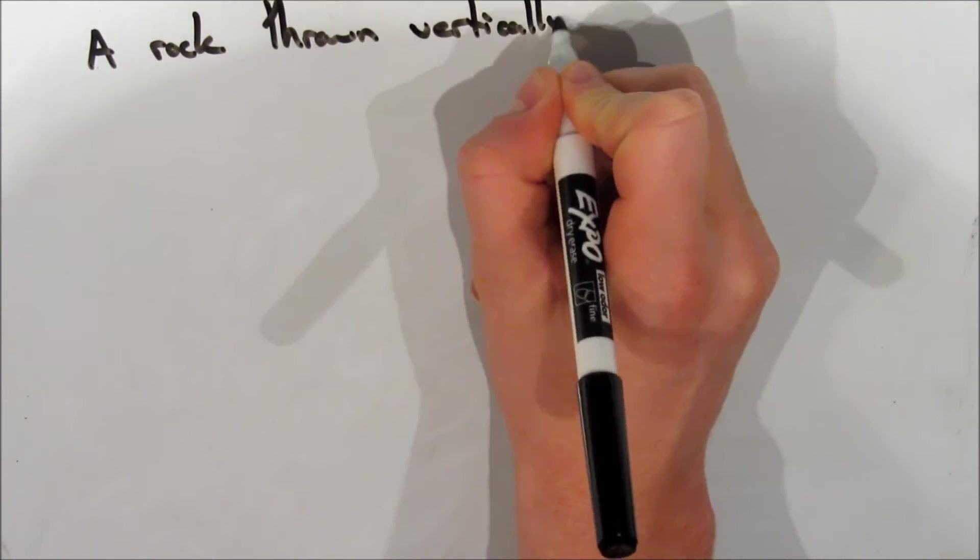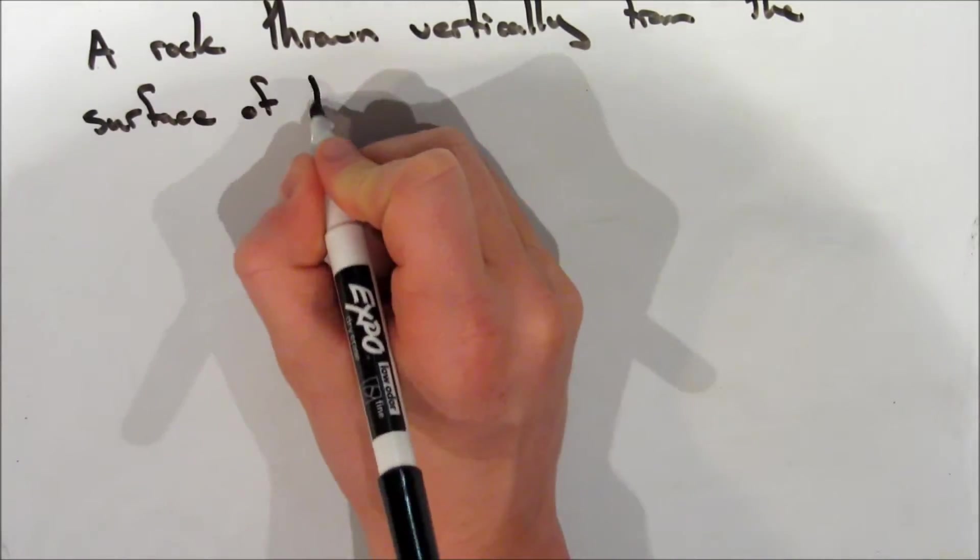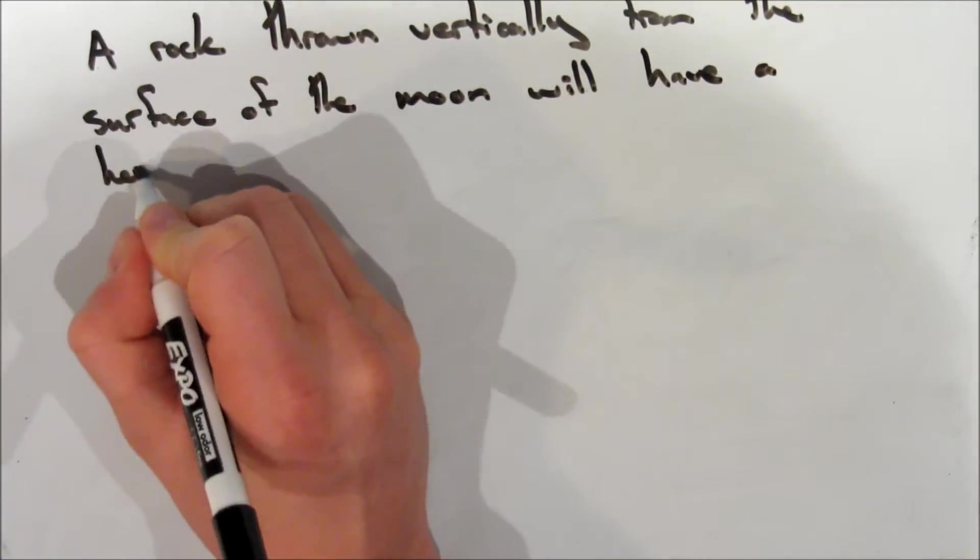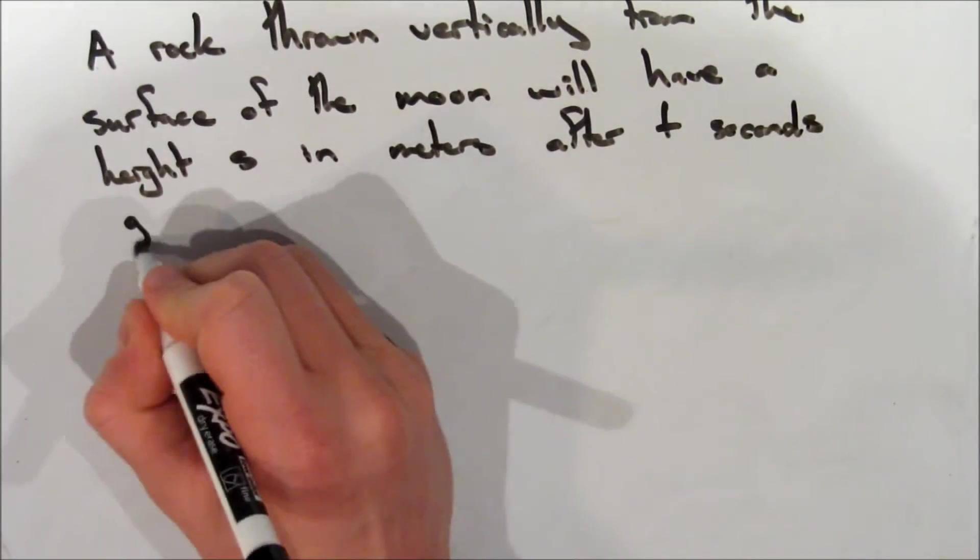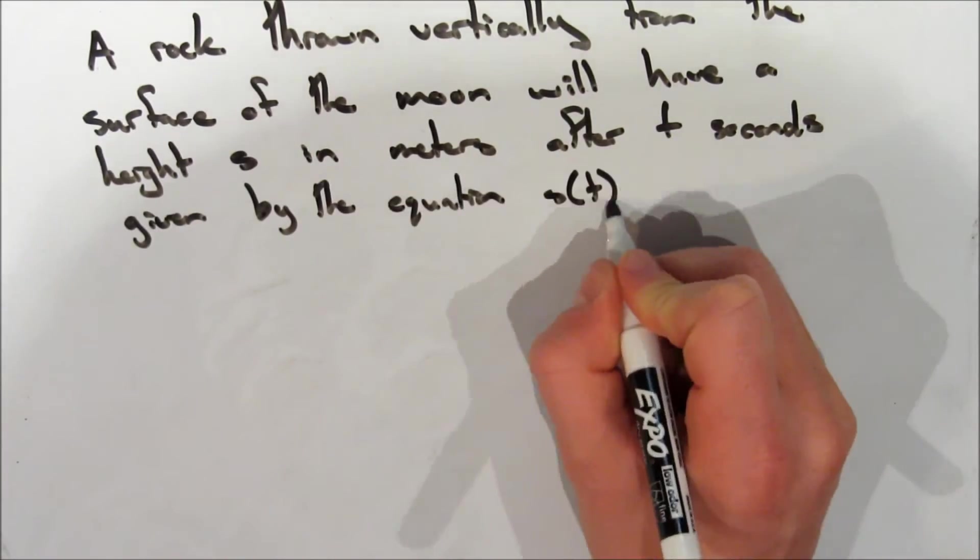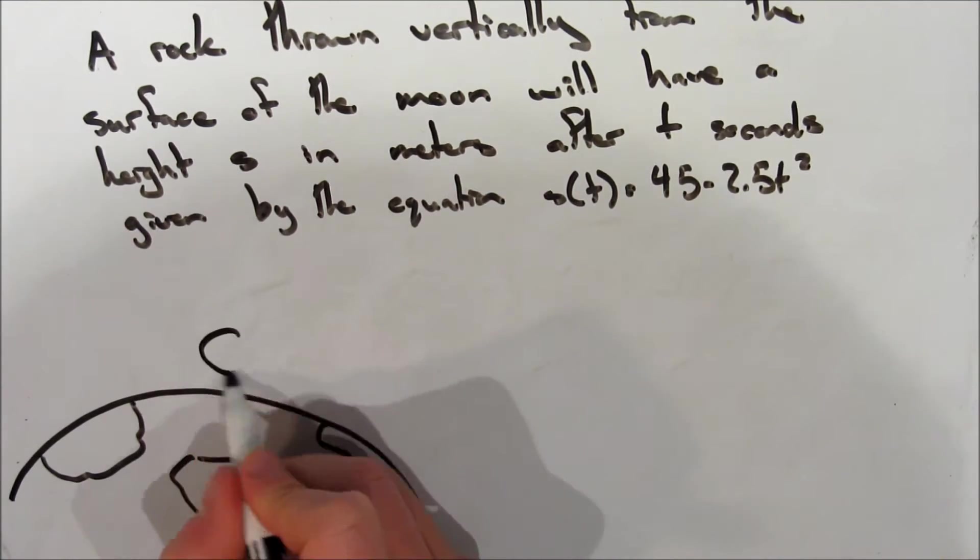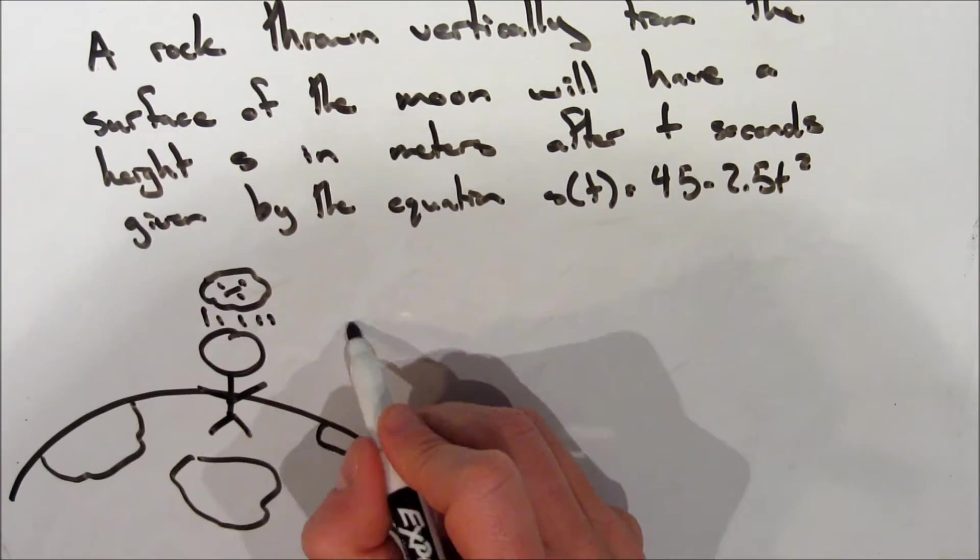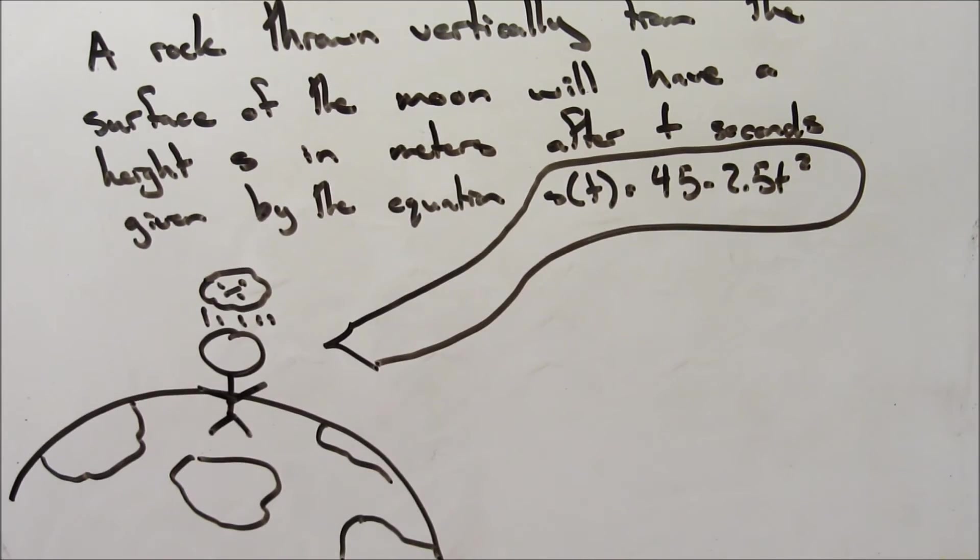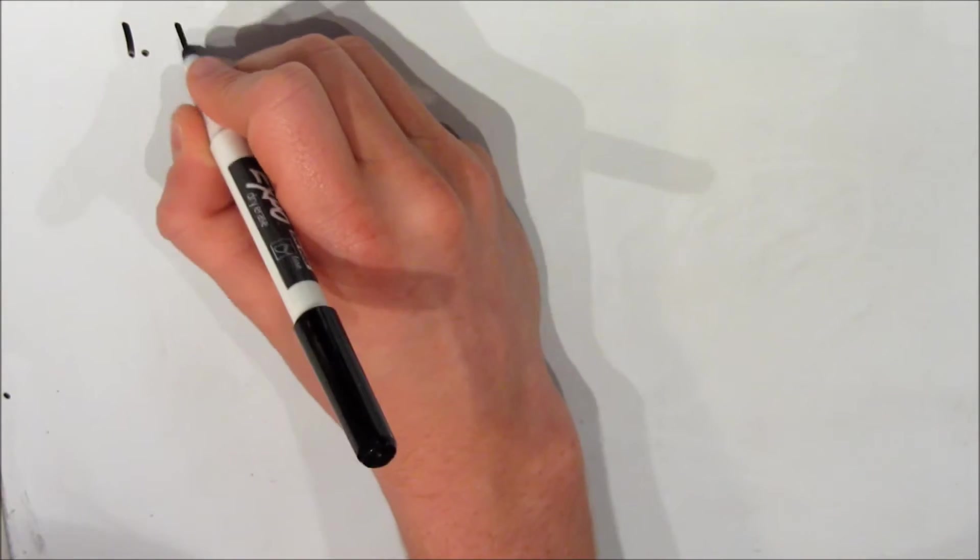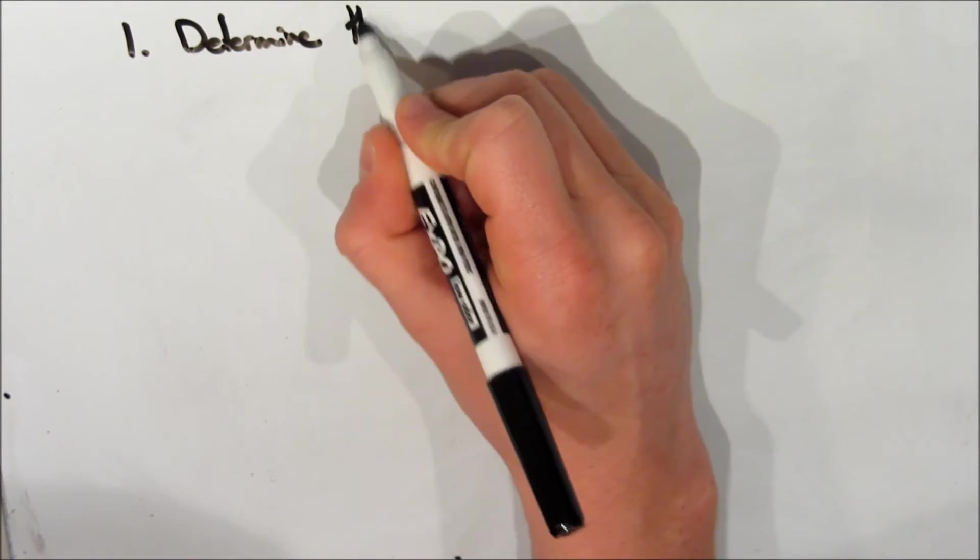Alright, so let's take a look at a scenario with a couple of questions. A rock thrown vertically from the surface of the moon will have a height s in meters after t seconds given by the equation s of t is equal to 45t minus 2.5 t squared.